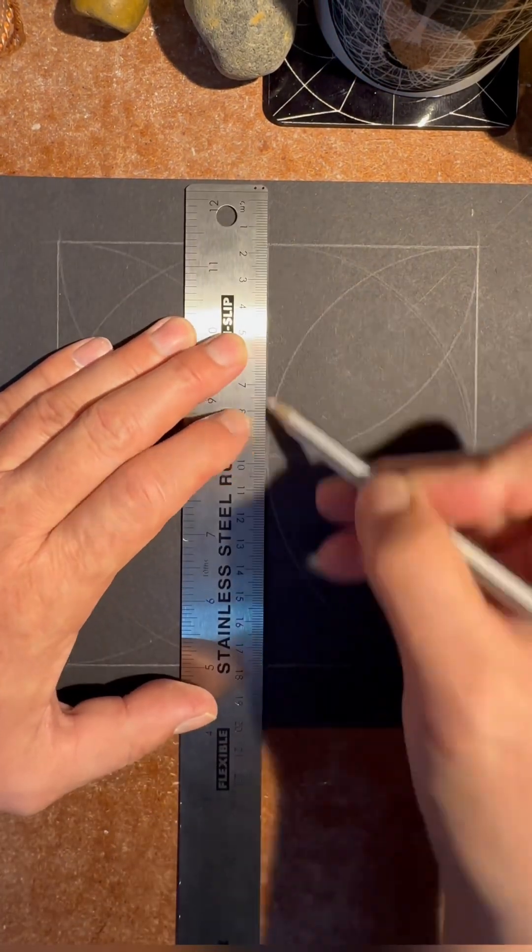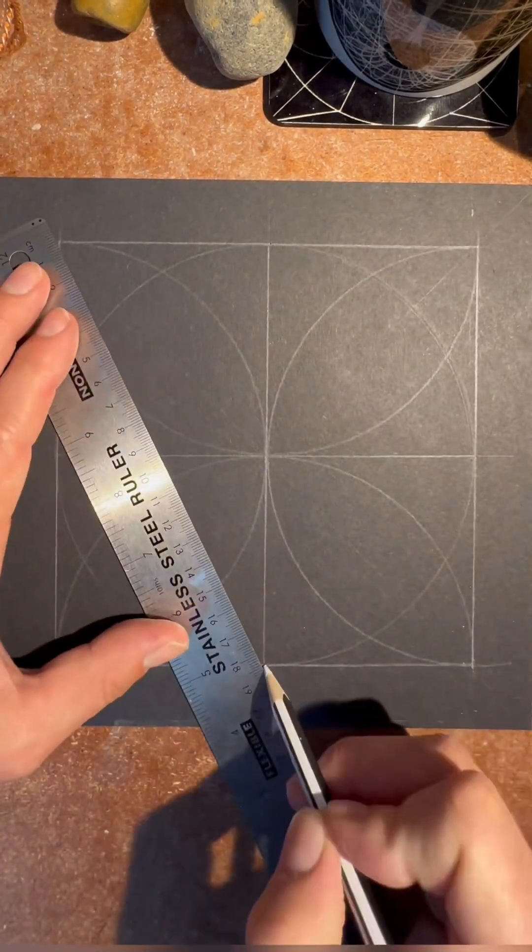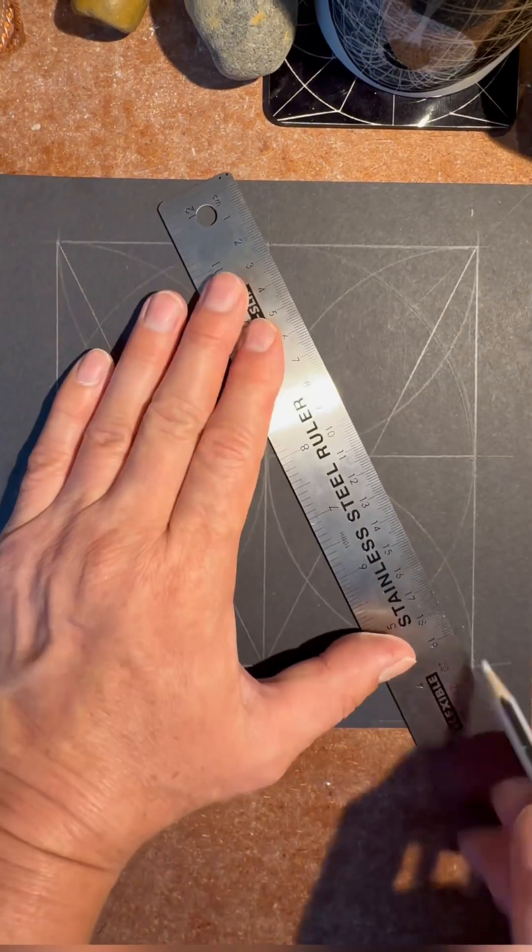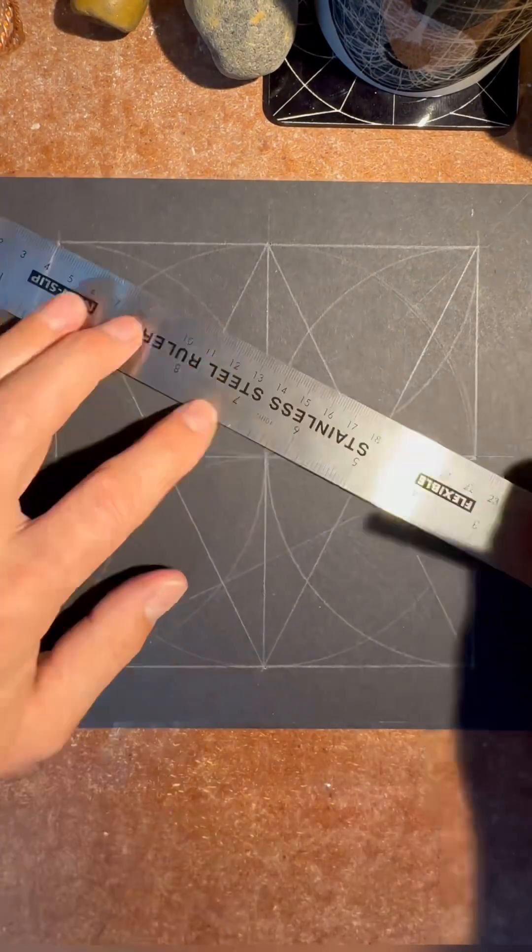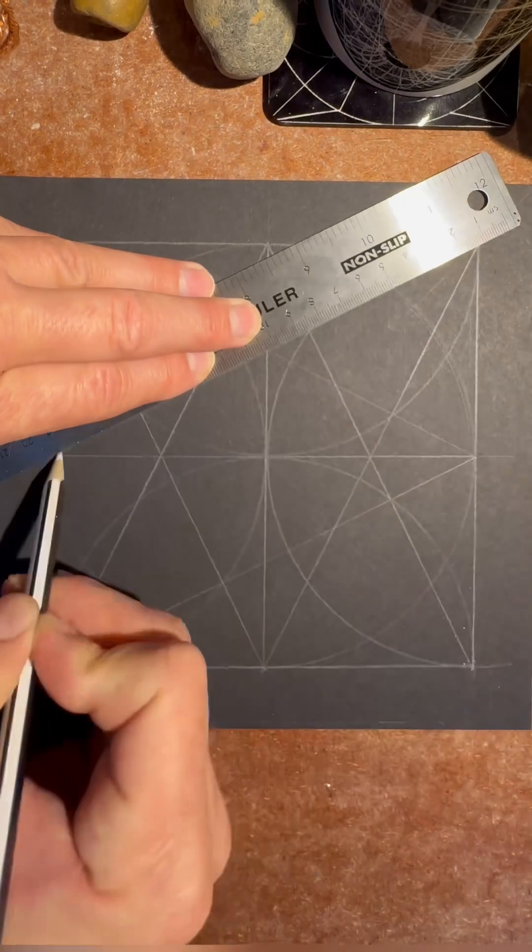Once you've done this, draw a line for the middle of the square and then draw diagonal lines from each corner inwards and outwards to form this pattern.